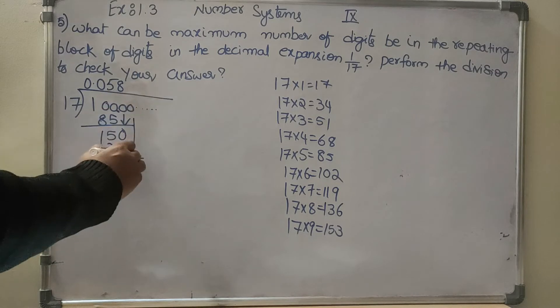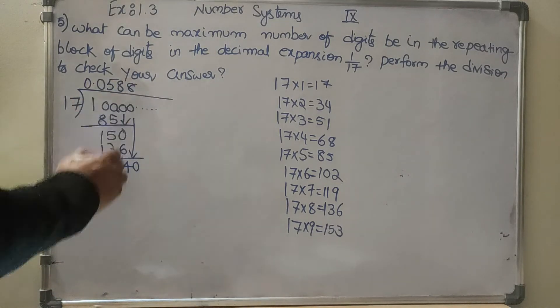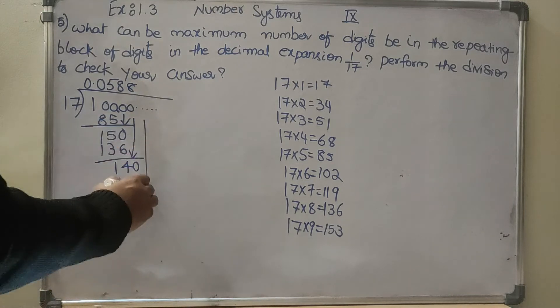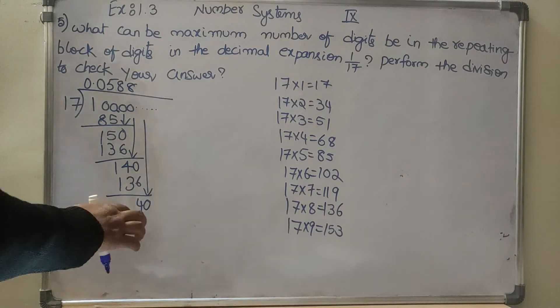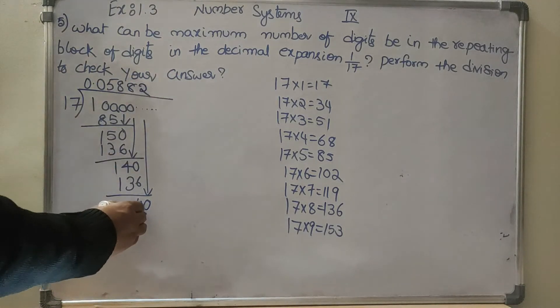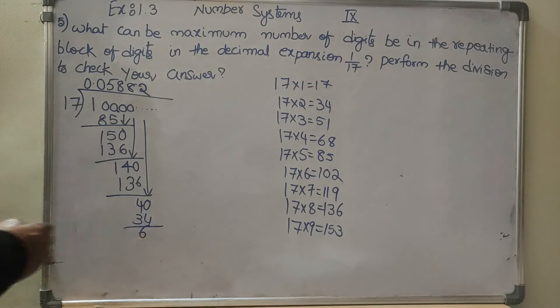0 comes down, again 8 times, 136, 4 is the remainder. 0 comes down, 40 means 2 times, 34, 6 is the remainder.